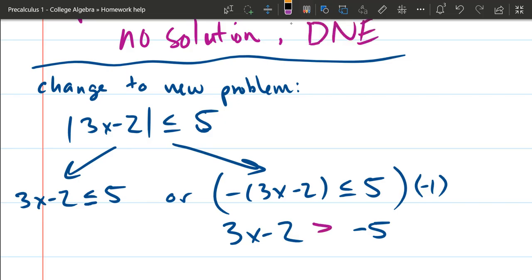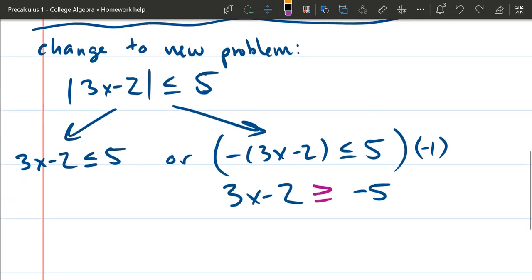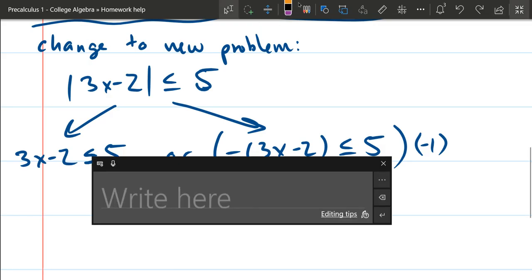That's super important, because if you just came in and wrote the negative on the right side without multiplying by that negative 1, you would actually get the opposite inequality that you should have. I'm not going to finish these inequalities here because all you do is add 2, divide by 3, and then you're looking at 2 separate inequalities. Hopefully this helps.